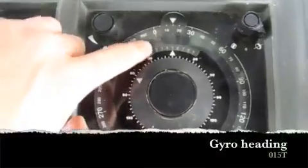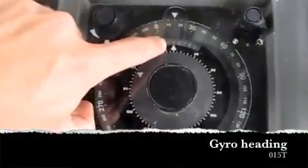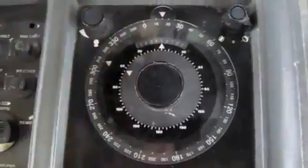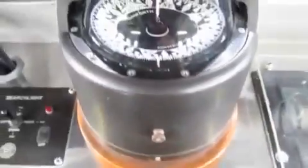So the first one is the gyro compass. Again, you just read it right off. We're going to use 015 in this case. And that supposedly points to true north.